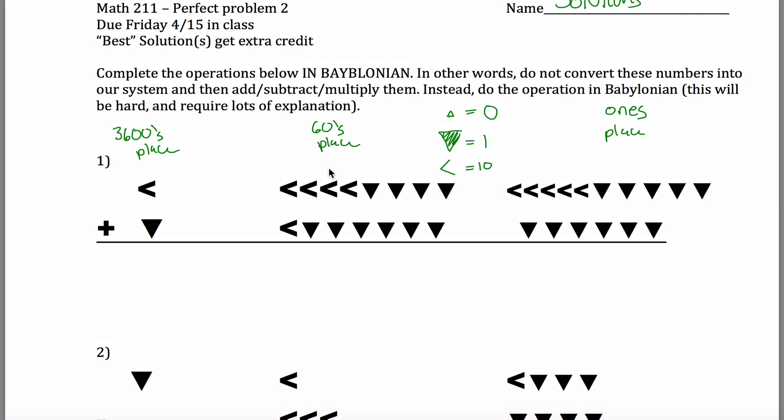So anytime you get 60 in one column, you carry 1 over, just like with our numbers, anytime you get 10 in one column, you carry 1 over. So let's see what's going on here.